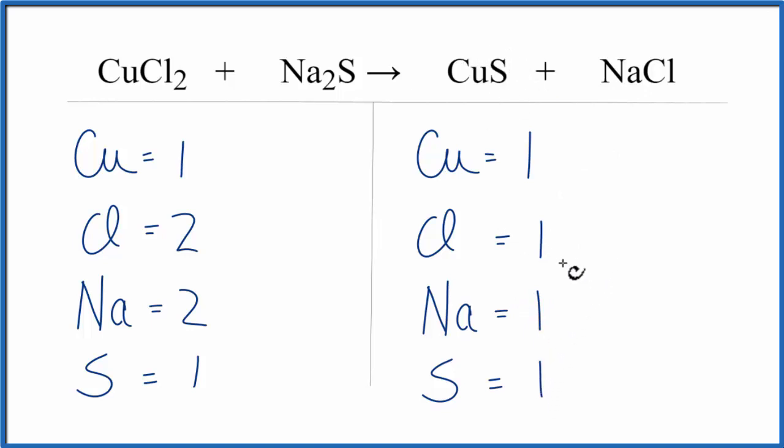So the equation's not balanced. We have 2 chlorines here, 1 here, 2 sodiums here, and 1 here. So we can change the coefficients in front of these compounds to try to get these numbers to be equal.